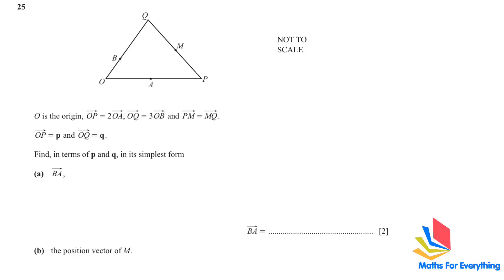Question number 25 is a vector question. Let's read and write down what has been given to us. We'll start with here. OP is equal to p. So, this is equal to p. And OQ is equal to q. So, this whole line is q and this whole line is p. The next part, OP is equal to 2 OA. So, the whole OP is twice OA. It means OA is half of p.